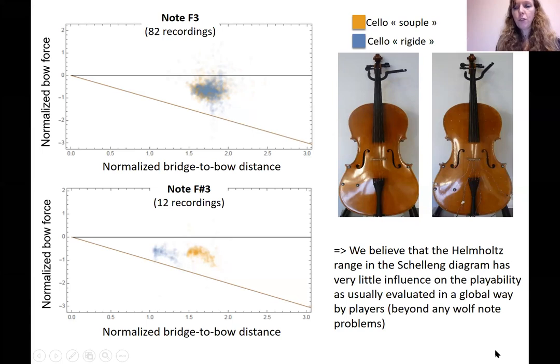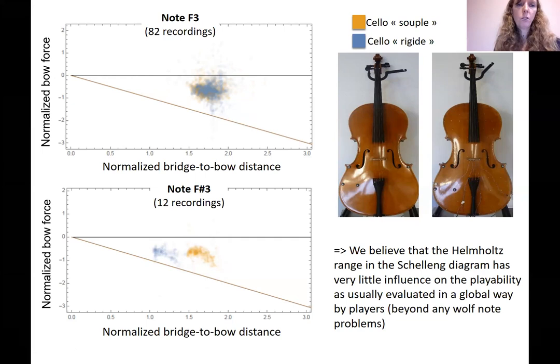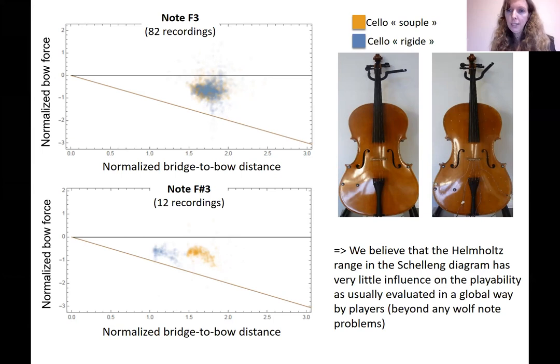Two types of measures were done: consensus among violinists (how many sorted the same violins together, measuring perceived similarity) and verbal comments analyzed linguistically for semantic properties shared by violins within groups. A statistical analysis of how violins were grouped produces a hierarchical tree, where a lower horizontal bar means the two violins were grouped together more frequently. We see two main groups, each subdivided into two — almost like two instruments per group.